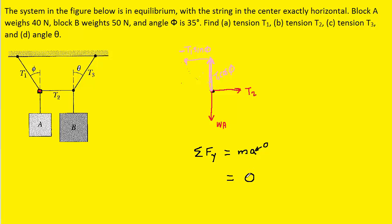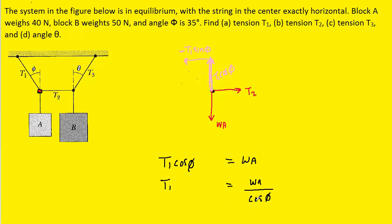Looking at the y direction, the forces acting there are T1 cosine of phi pointing upward — giving it a positive value — and WA pointing downward, so we subtract WA. In part A, we're solving for T1, so we add WA to the right-hand side, then divide both sides by the cosine of the angle. Plugging in the known values — the weight of block A is 40 newtons and the angle phi is 35 degrees — we get approximately 49 newtons. This is the value of T1 and the correct answer to part A.